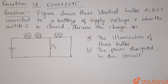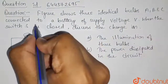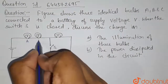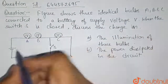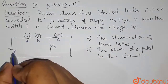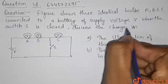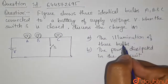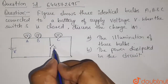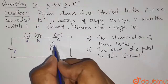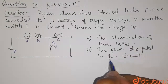Hello students, here is our question. The figure shows three identical bulbs A, B, and C connected to a battery of supply voltage V. When the switch S is closed, discuss the change in the illumination of the three bulbs and the power dissipated in the circuit.